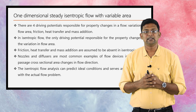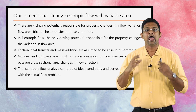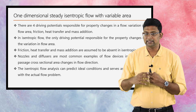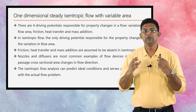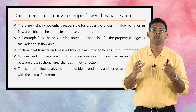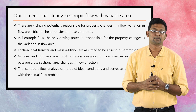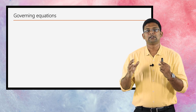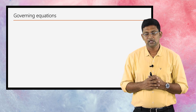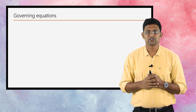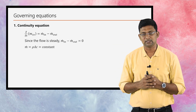The isentropic flow analysis can predict the real conditions and serves as a comparison with the actual flow problem. Hence, isentropic flow defines the ideal condition to be used for computing the efficiency of flow devices such as nozzles and diffusers. Let us start the discussion about one dimensional steady isentropic flow with the governing equations. There are mainly six governing equations.